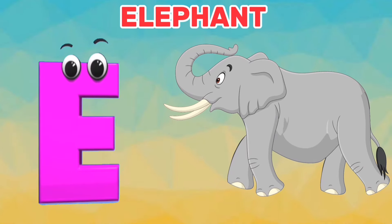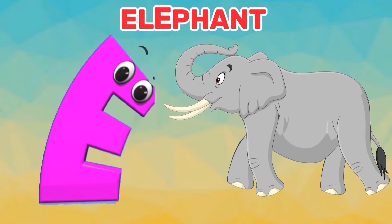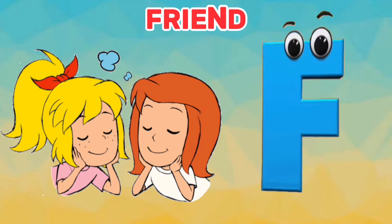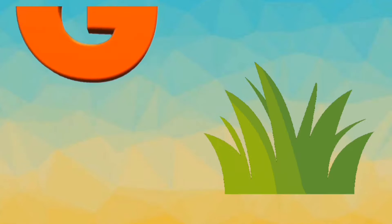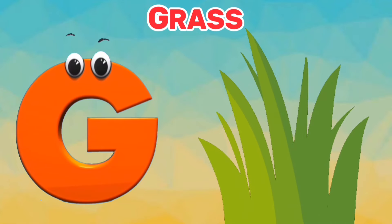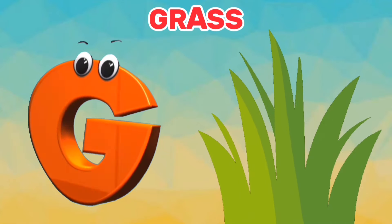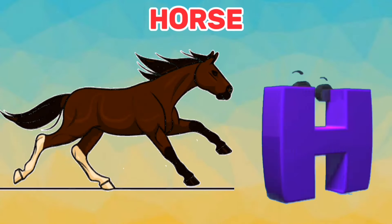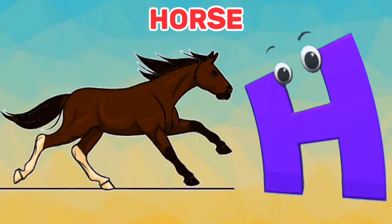E is for Elephant. E. Elephant. F is for Friend. F. Friend. G is for Grass. G. Grass. H is for Horse. H. Horse.